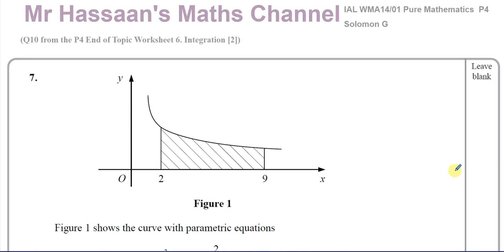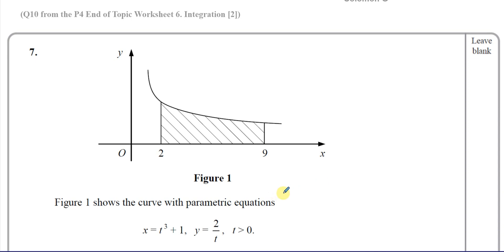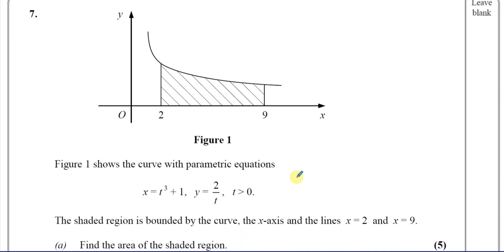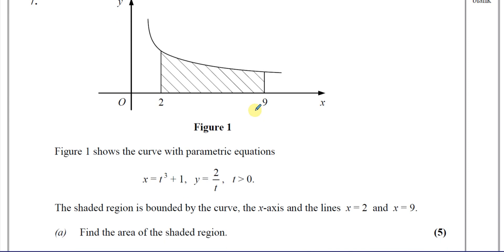Welcome back, this is Mr. Hassan's Maths channel. I'm now answering a question from the Solomon G collection of C4, which is now known as P4 Pure Mathematics from the international A-level Edexcel collection. This is also from my end-of-topic worksheet number six, Integration Two. Question 10 from that worksheet is about a curve defined by parametric equations x equals t cubed plus one and y equals two over t, where t is greater than zero. The shaded region is bounded by the curve, the x-axis, and the lines x equals two and x equals nine.